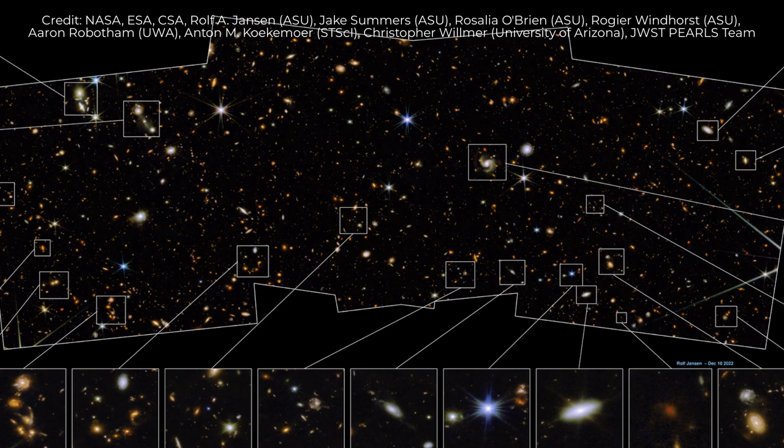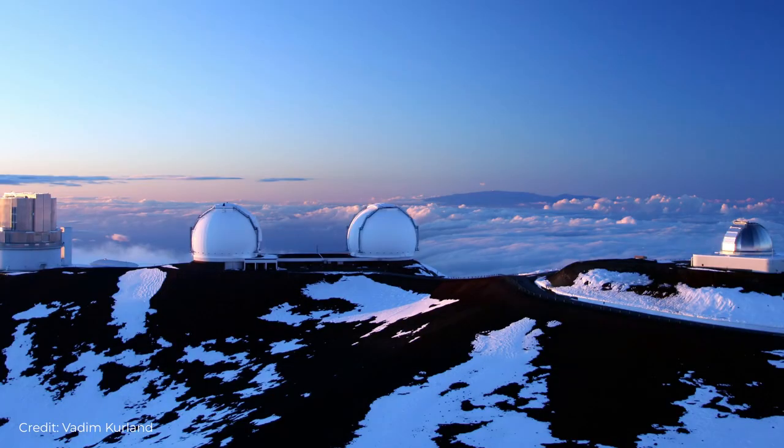This success means that the JWST's images have a clarity to them that is inaccessible by Hubble, NASA's retired Spitzer Space Telescope, or even larger ground telescopes such as those at the Keck Observatory in Hawaii, whose vision is blurred by Earth's atmosphere.